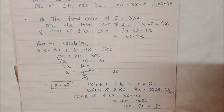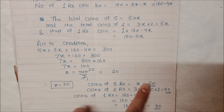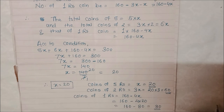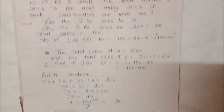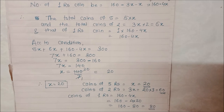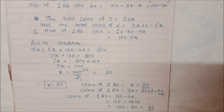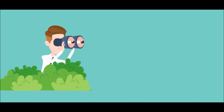Aap chahein to inki addition karke hum cross-check kar sakte hain. Dekhiye: 60 plus 20 = 80, aur 80 plus 80 = 160. Humne question mein pehle hi diya tha ki total number of coins 160 the. To hamara answer bilkul sahi hai. Is tarah se friends, Question Number 15 complete hota hai. 5 rupee ke 20 coins, 2 rupee ke 60 coins, aur 1 rupee ke 80 coins. Thank you so much!